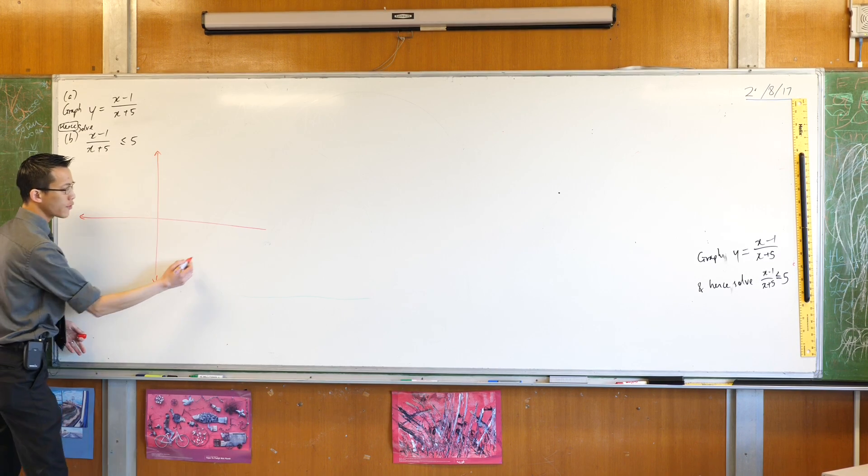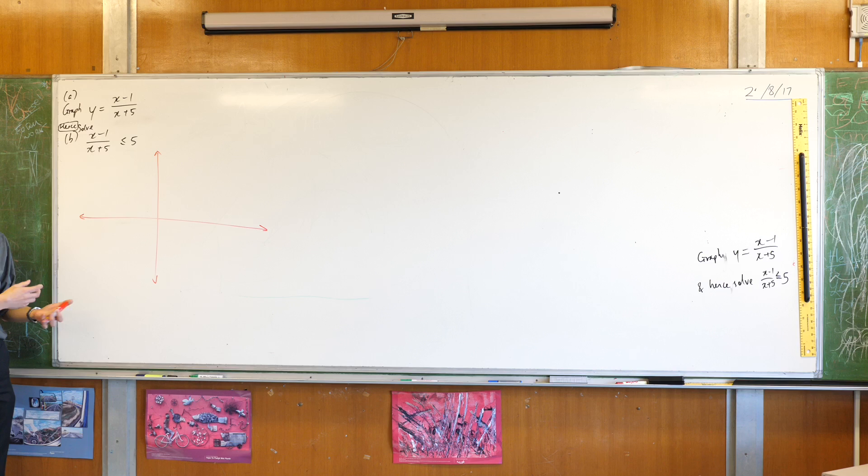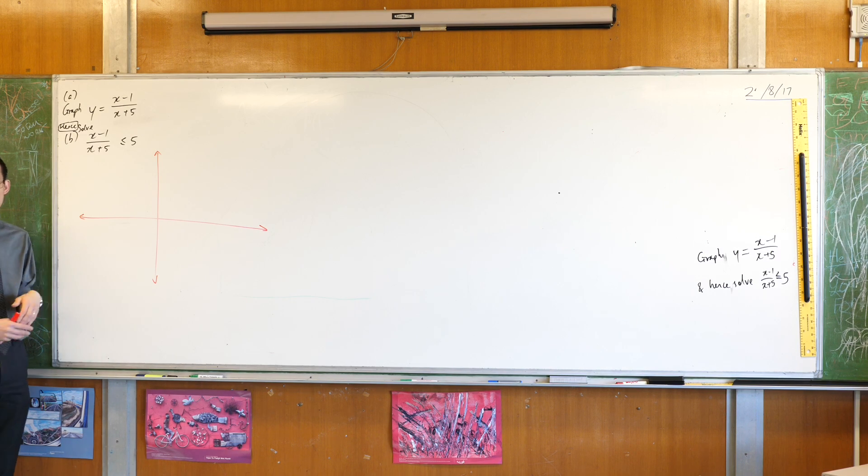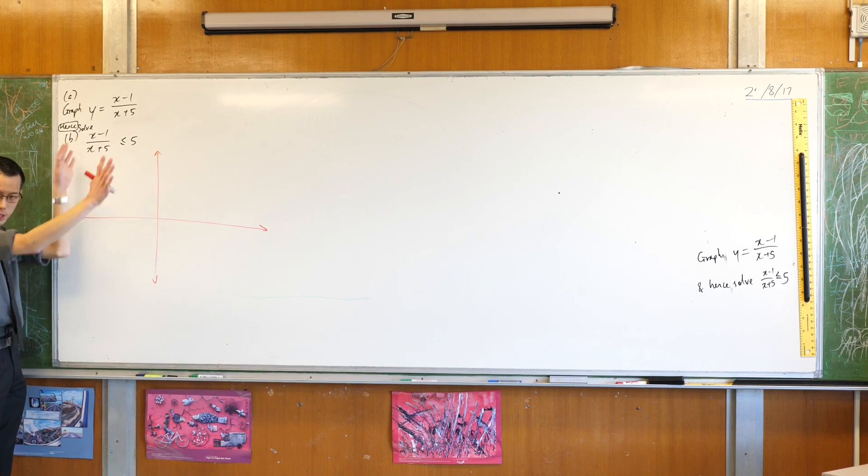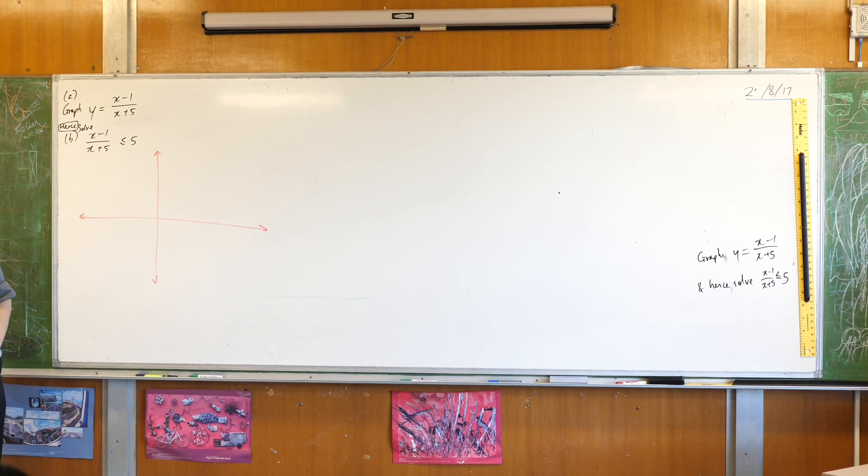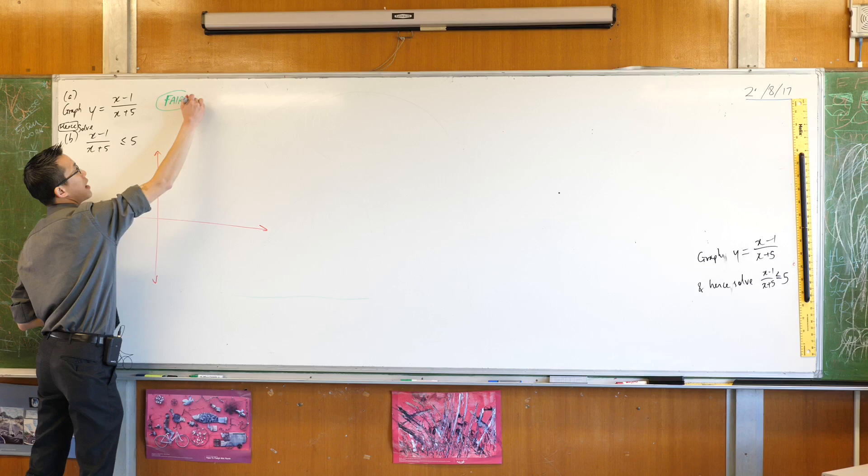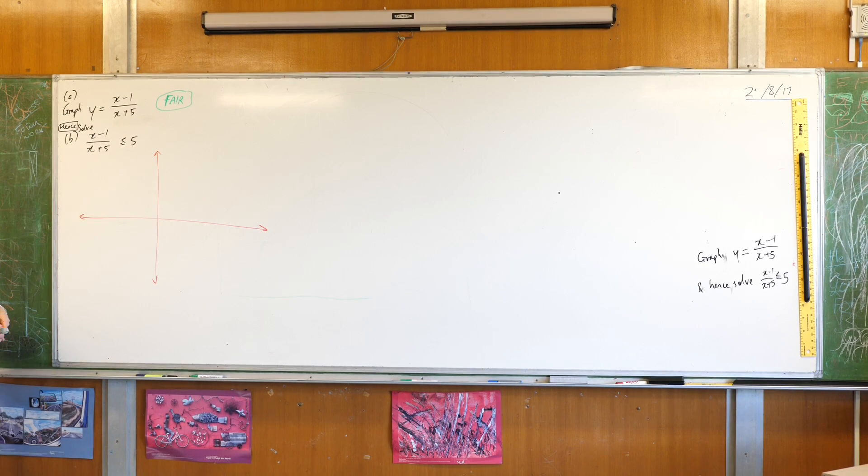is you sort of add features of the graph onto your Cartesian plane until you've got so many features that there's only one graph that can possibly fit all of the features that you've got. The guide that I've given you before still applies for something like this but it's quite simple so in fact you'll find we don't even need to go through all of these steps before we've got enough of a picture to know what the graph looks like.